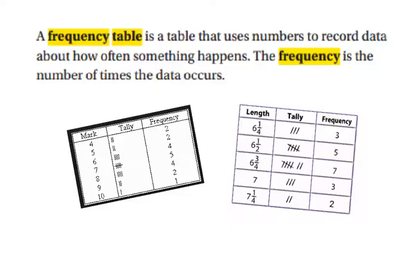The first one we're going to talk about is the frequency table. A frequency table is a table that uses numbers to record data about how often something happens. The frequency is the number of times that the data occurs.